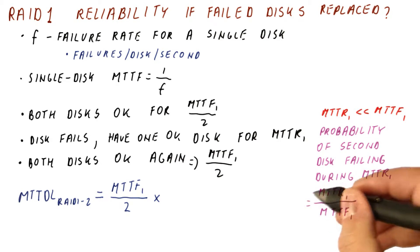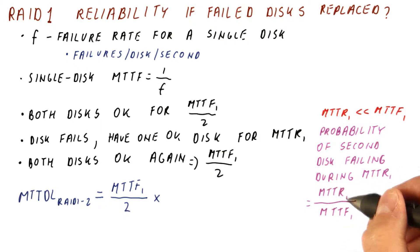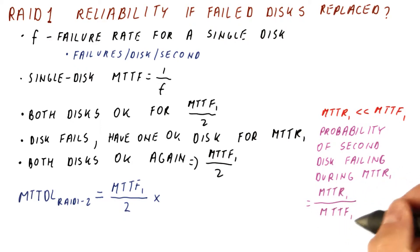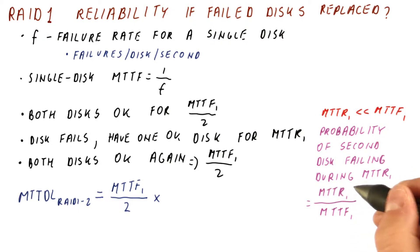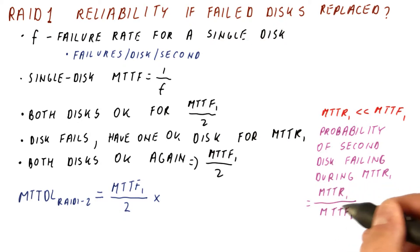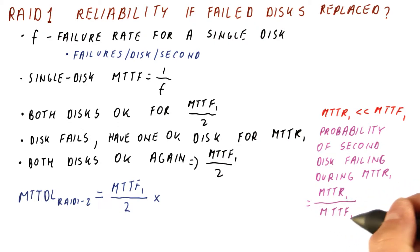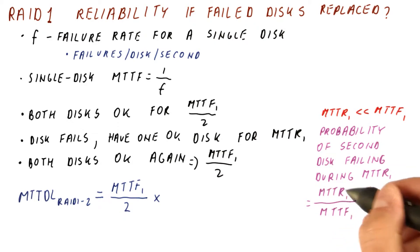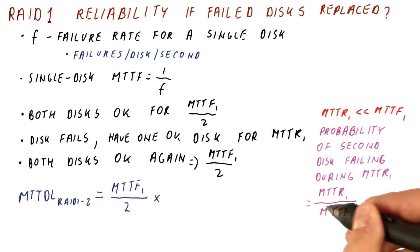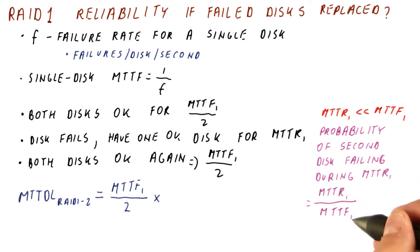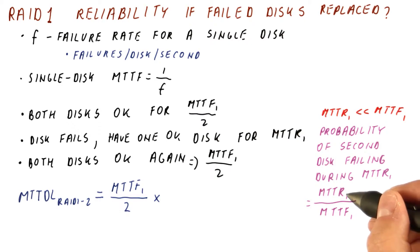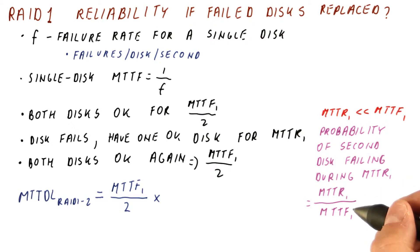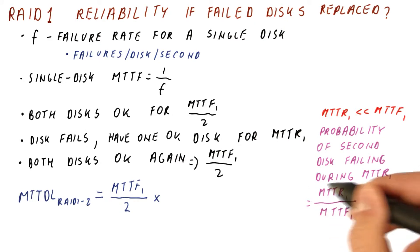For example, if the MTTR is one day and MTTF is 100 days, then the probability of the second failure during the repair period is simply the length of the repair period divided by the period we expect the disk to survive. So if the time to repair is one day and the time to failure is 100 days, then we can expect a one-in-a-hundred chance of a disk failing during that one day.